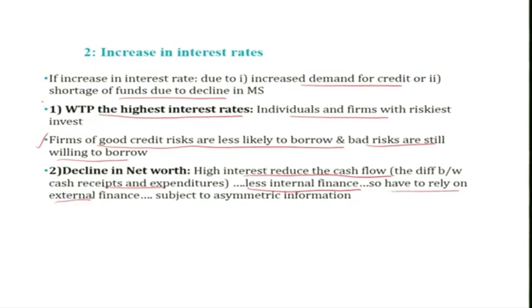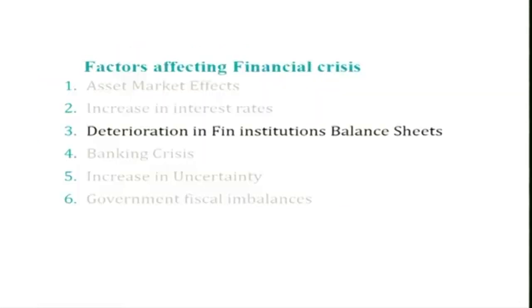With less internal finance due to reduced cash flow, firms have to depend on external finance, which is again subject to asymmetric information. Empirically, internal finance is the main source of funding for many firms because of asymmetric information. But when interest rates increase, the debt burden grows and cash flow declines further, forcing firms to depend even more on external finance, which is again subject to adverse selection and moral hazard problems.